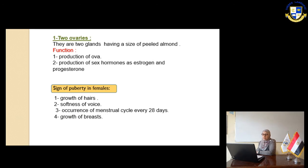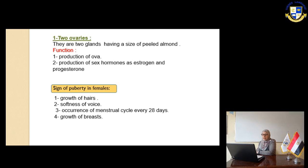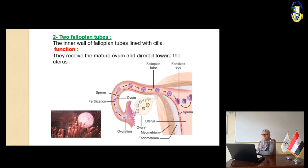Slide number 8. The two ovaries are two glands the size of a peeled almond. Their function is to produce ova, and also to produce the sex hormones estrogen and progesterone. The signs of puberty in females include: growth of hair, softness of the voice, the start of the menstrual cycle every 28 days, and growth of the breasts.